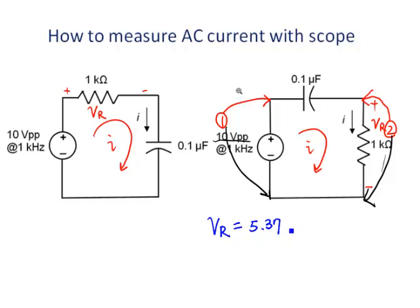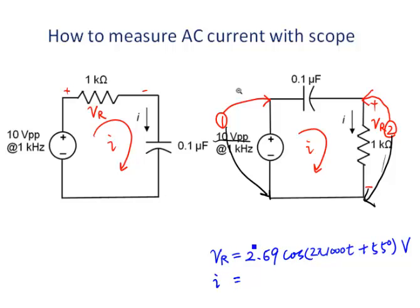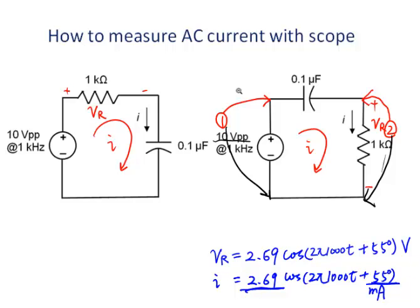The peak-to-peak value of the voltage across the resistor is 5.37 volts, and the phase angle is 55 degrees. We measure the amplitude and phase angle separately. The peak value is 5.37 divided by 2, that is 2.69 V. In time domain: 2.69 cos(2π × 1000t + 55°) V. The current is the voltage divided by the resistance: 2.69 V divided by 1 kΩ gives 2.69 milliamps. So the current is 2.69 cos(2π × 1000t + 55°) mA.